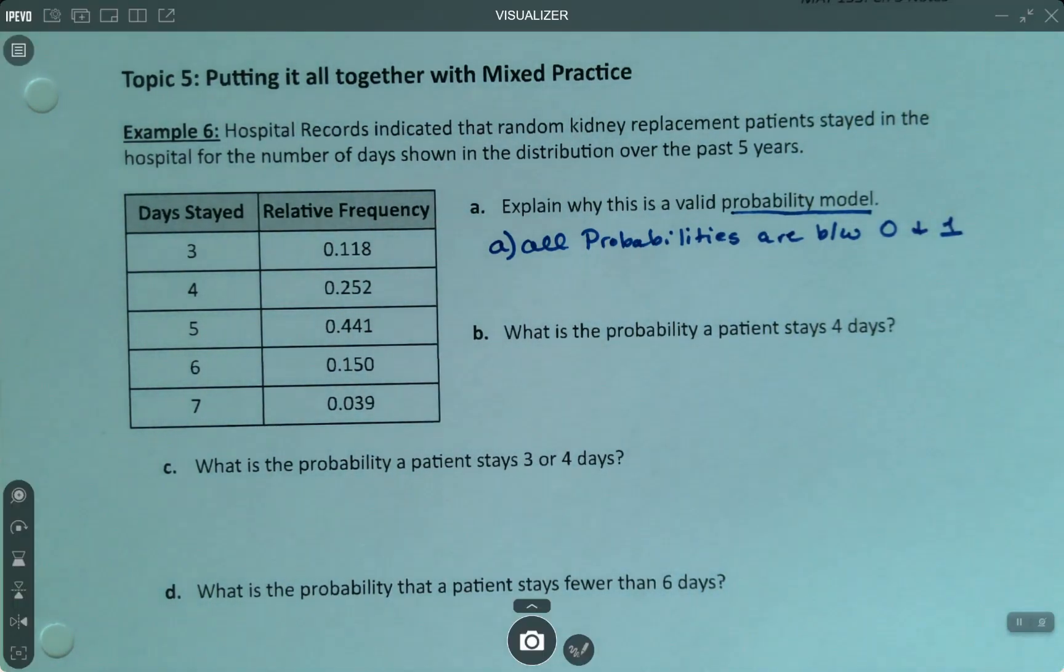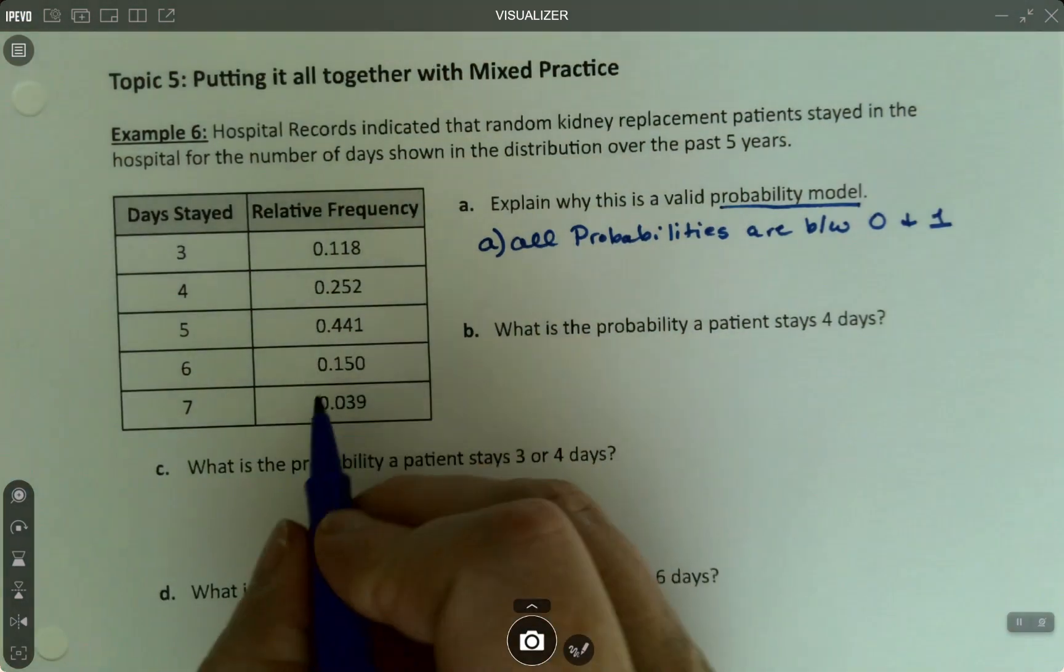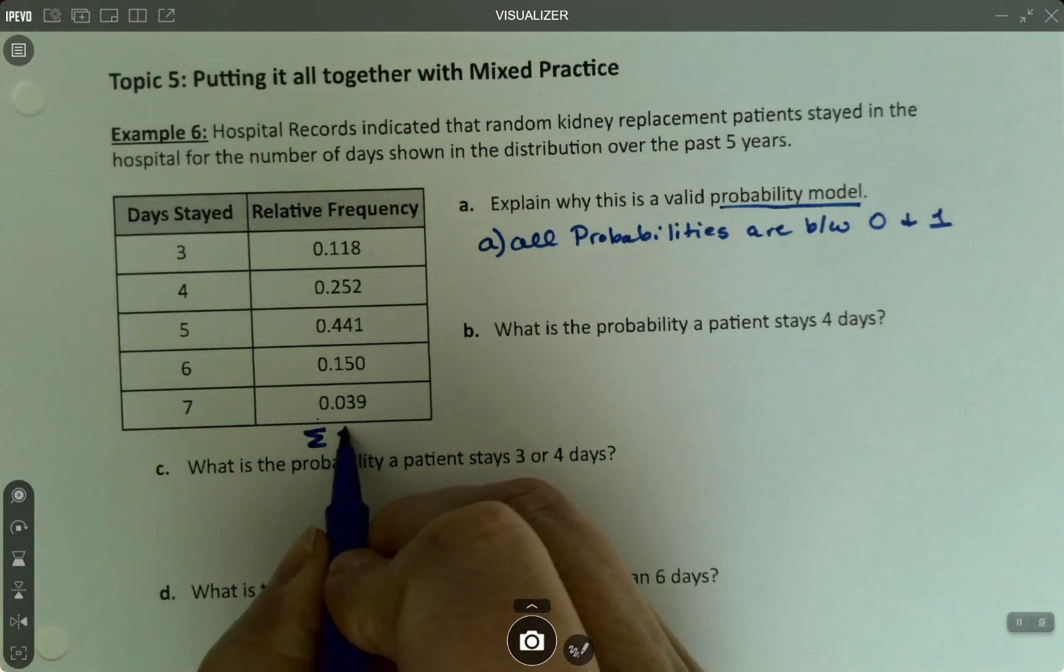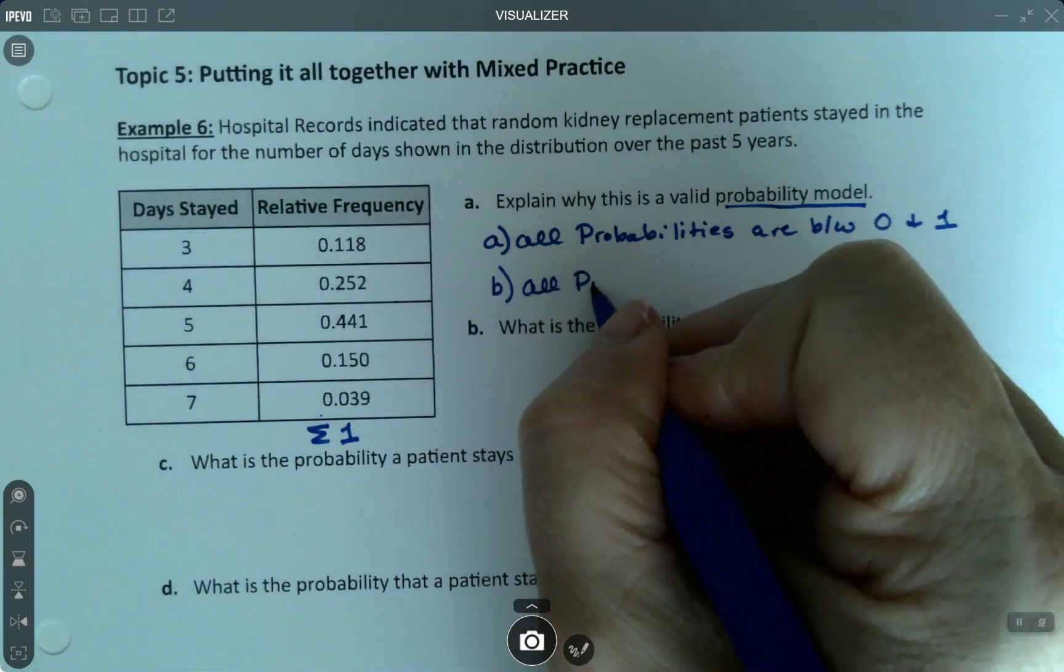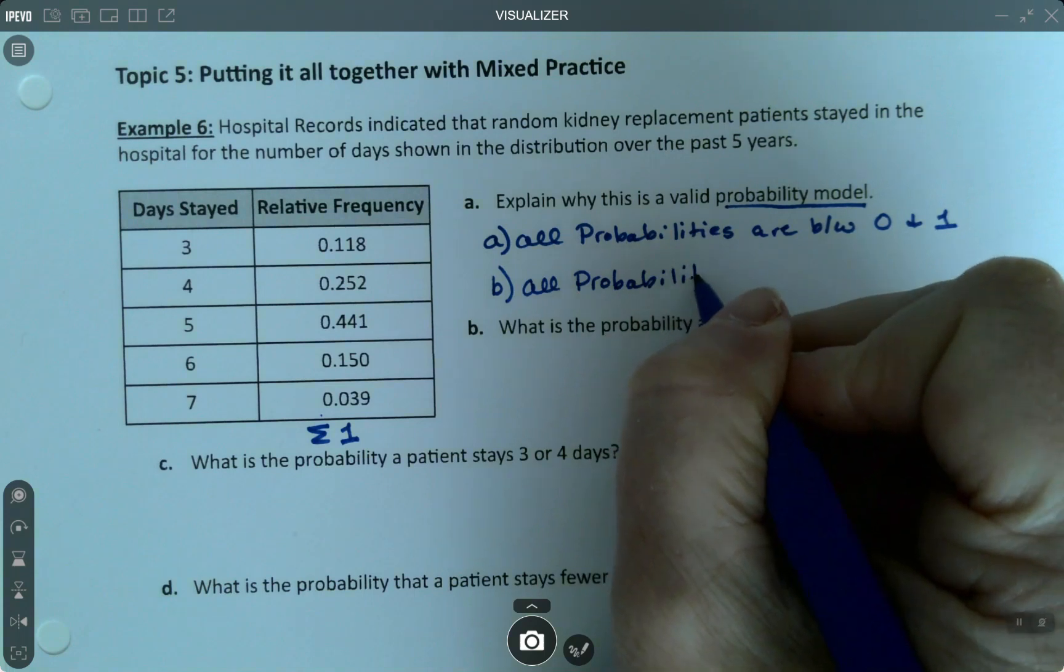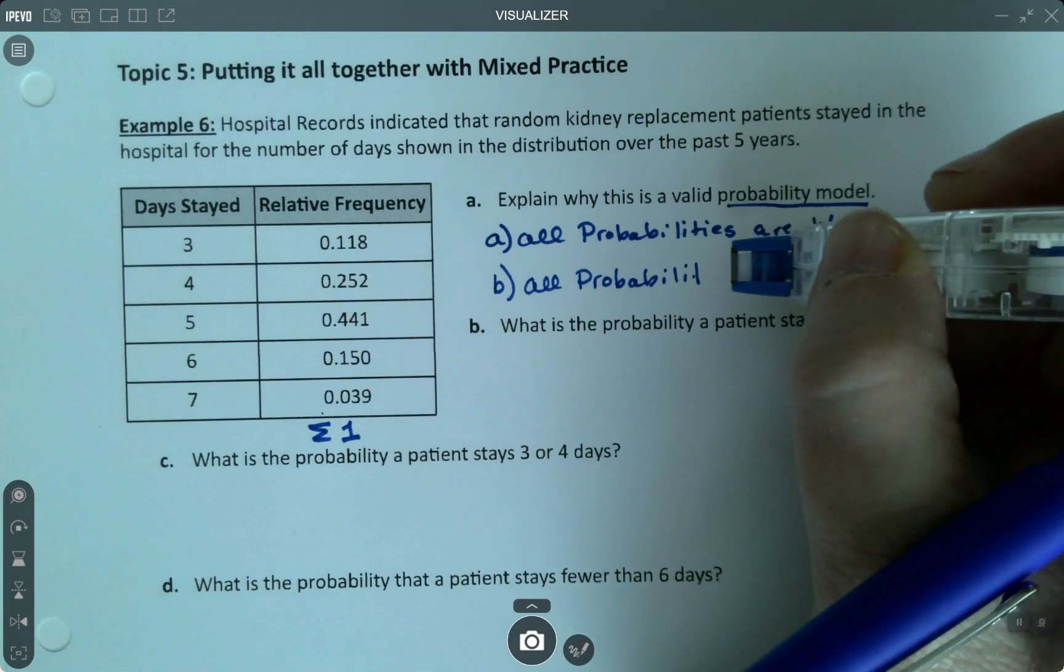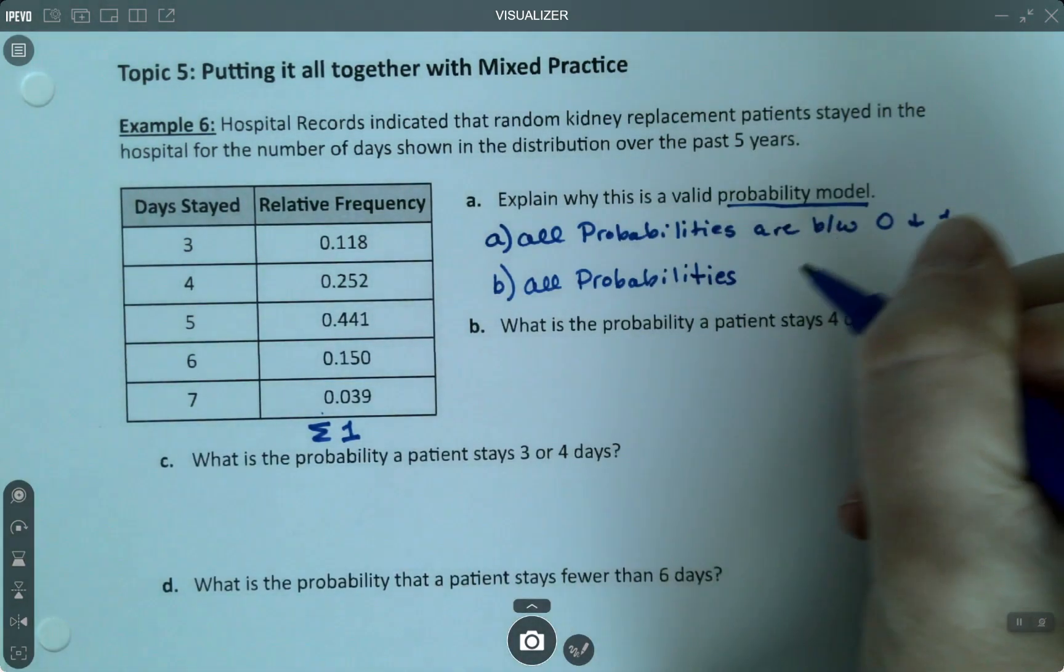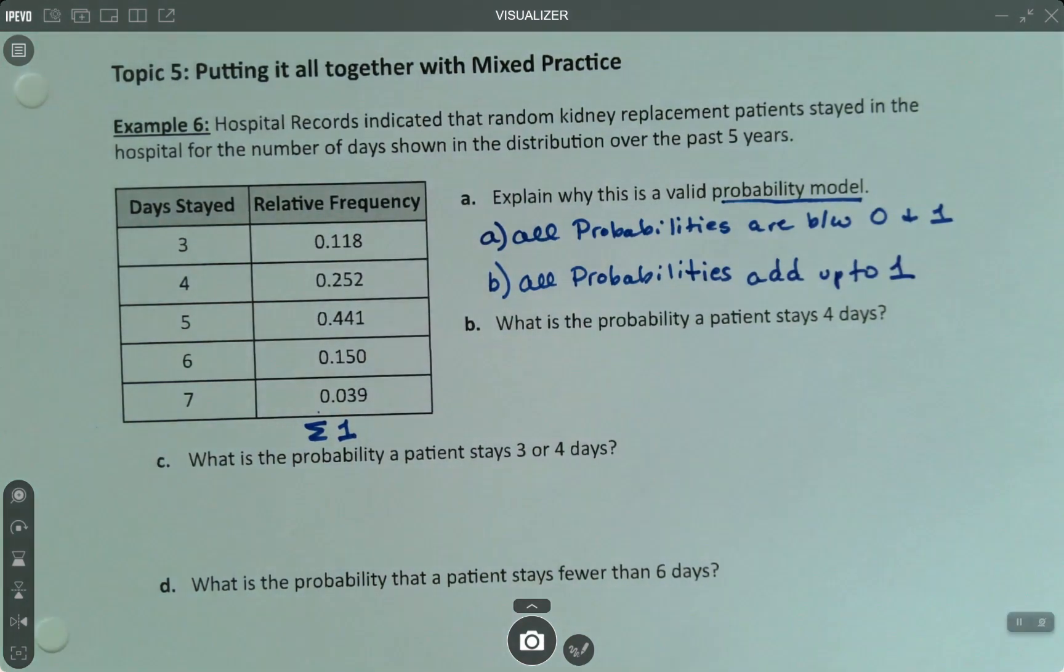Now we need to check that they add to one. So let me go grab decimals really quickly and add these up. Yep, they make one. No problem. All right, so we know that the sum over here is one. So all the probabilities add up to one. Done.